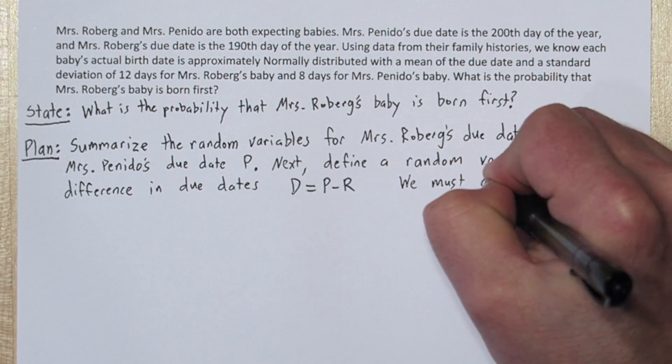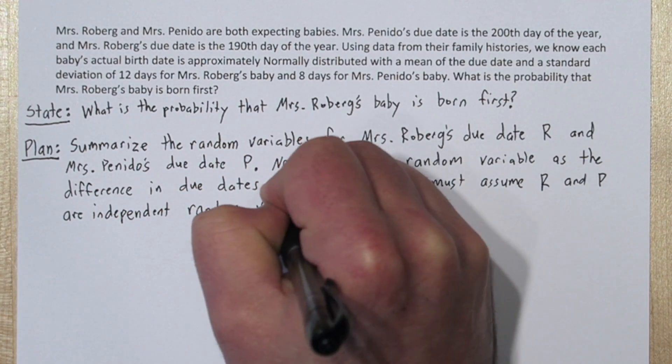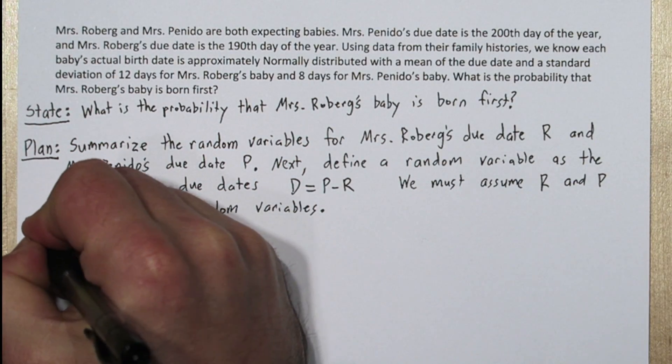Now in order to do this, we need to assume that R and P are independent random variables. And given the context of this problem, that seems like a fair assumption.